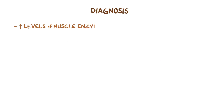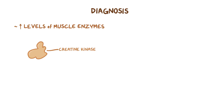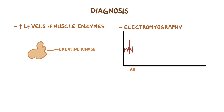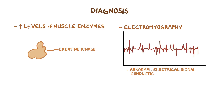Diagnosis is based on elevated levels of muscle enzymes like creatine kinase, which get released into the blood when myocytes are destroyed. Additionally, electromyography can be used to detect regions of dead muscle cells that cause abnormal electrical signal conduction. Most importantly, a muscle biopsy can show signs of inflammation along with inclusions or vacuoles of abnormal proteins.